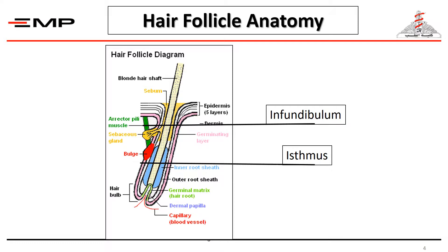Let's look at the hair follicle anatomy. The hair follicle consists of the hair shaft and the follicle itself, divided into three parts. The most superficial part is the infundibulum, which starts at the epidermis and ends at the opening of the sebaceous gland. The isthmus is the region between the sebaceous gland opening and the bulge area, where the erector pili muscle attaches and stem cells reside. Any infection above the infundibulum is superficial; below that is a deep infection.